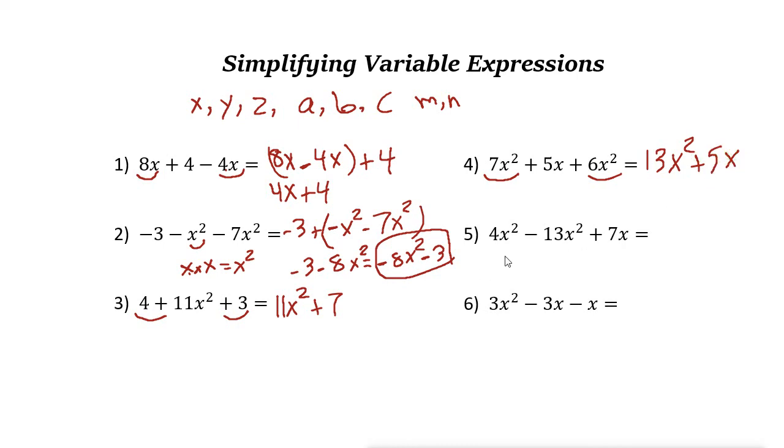Next one. These two are like terms. 4x² - 13x² is -9x² + 7x. That's the final answer.